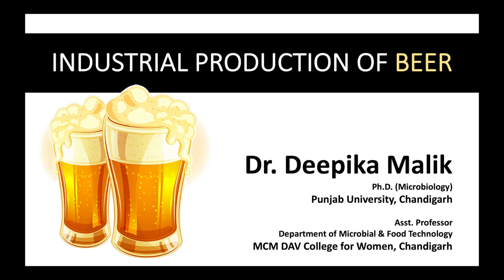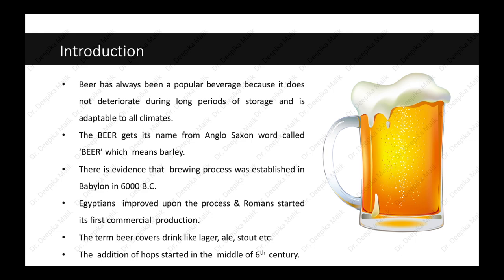Hello everyone, I am Dr. Deepika Malik. Today we're going to start with industrial production of beer. Beer has always been a popular beverage because it does not deteriorate during long periods of storage and is adaptable to all climates. With various names and in many forms, it has been produced from the earliest times. The beer gets its name from the Anglo-Saxon word 'beer' which means barley. There is evidence that the brewing process was established in Babylon in 6000 BC. At first brewed in the home or in monasteries, beer had become a commercial product in Europe by the late Middle Ages.